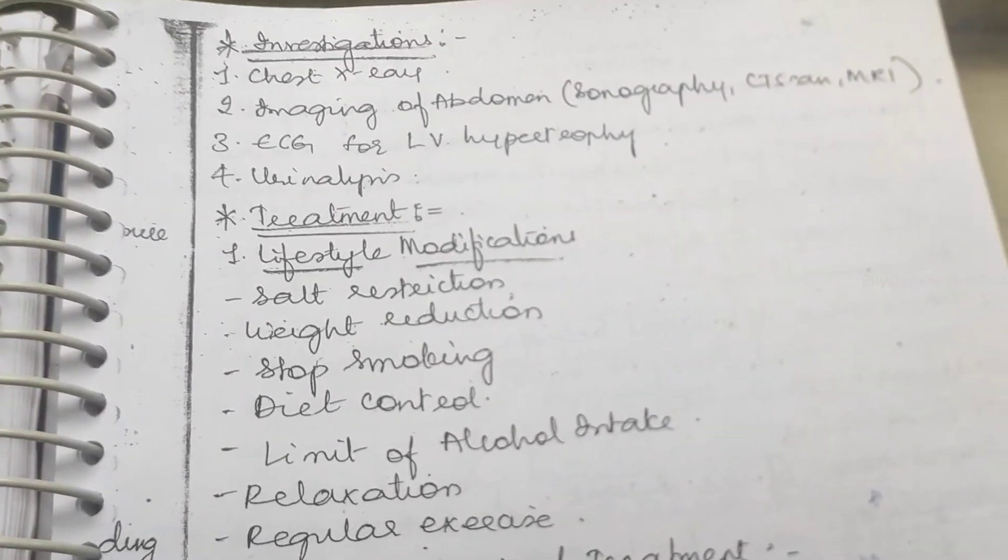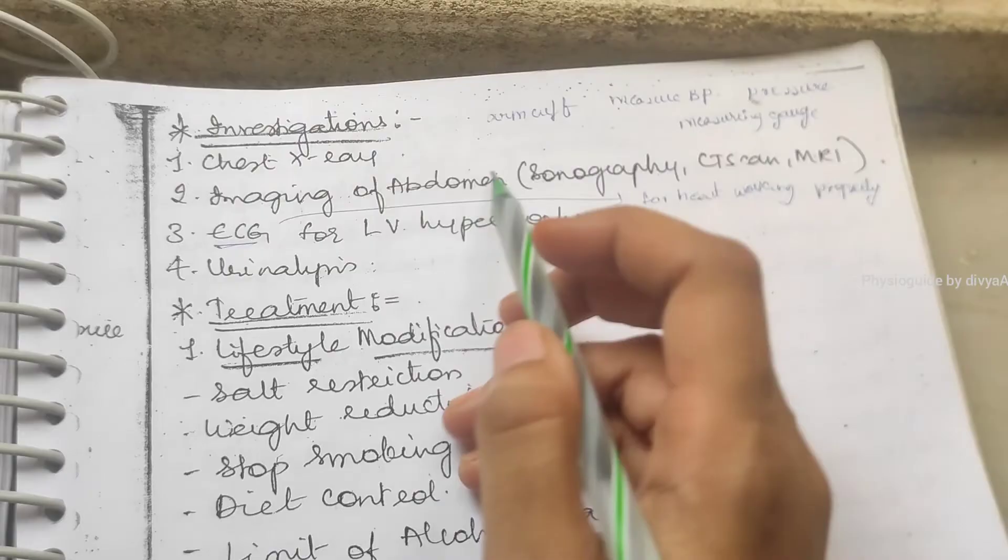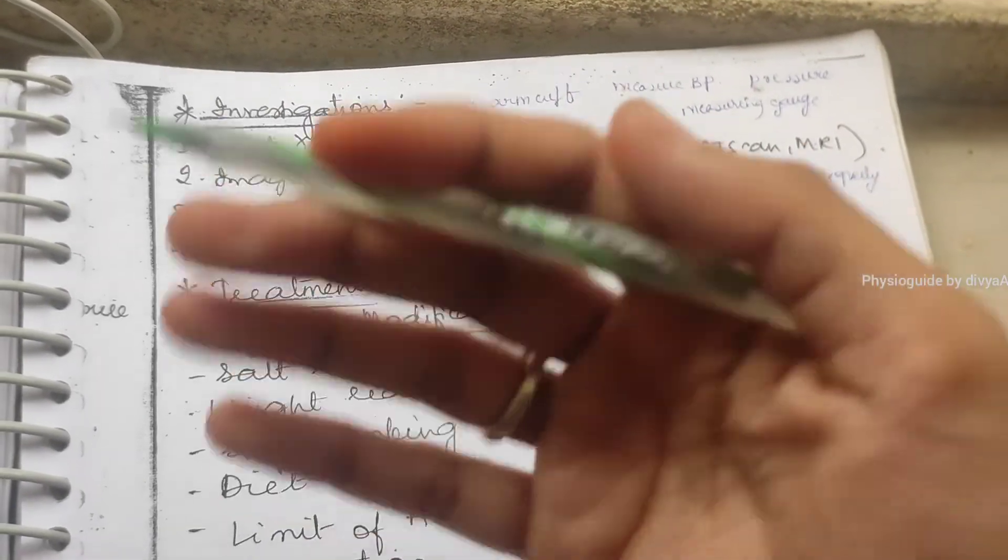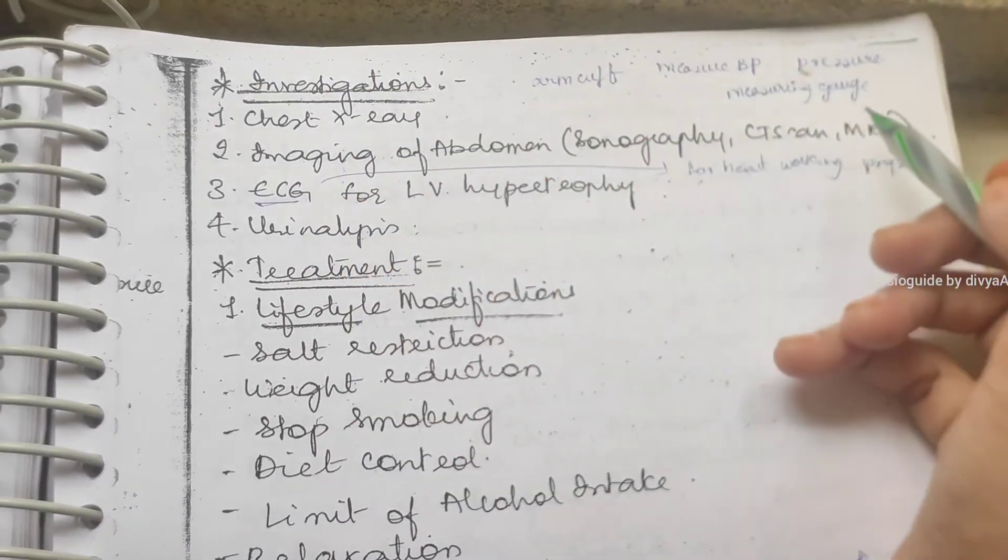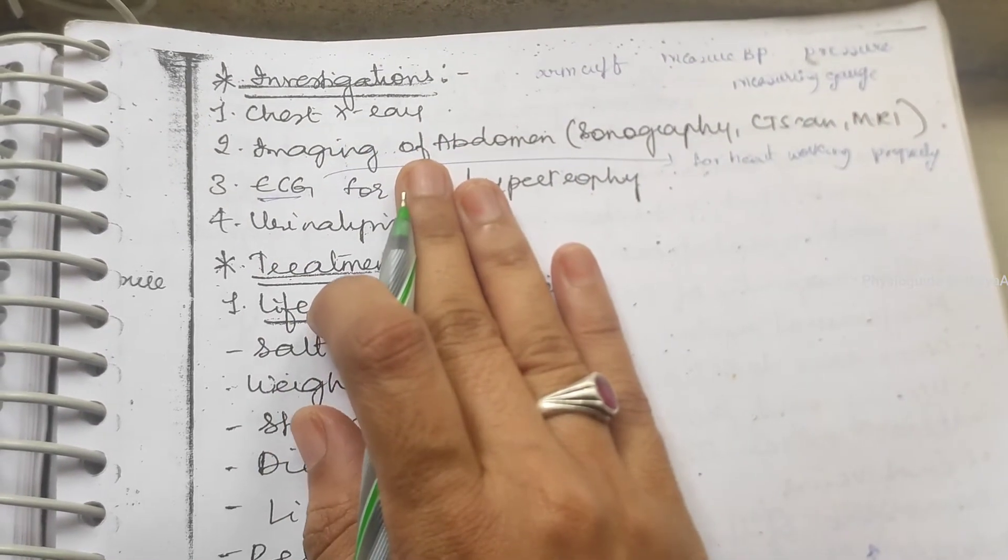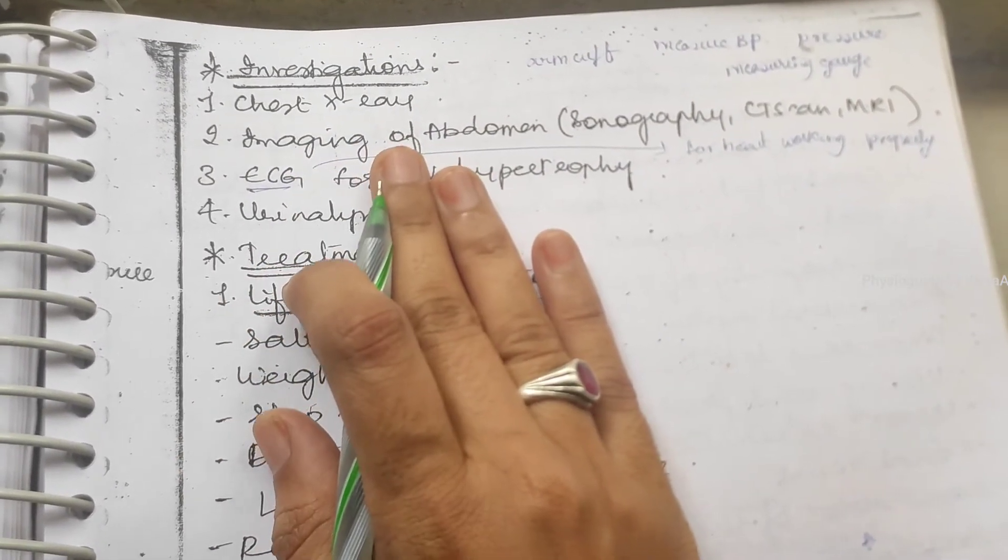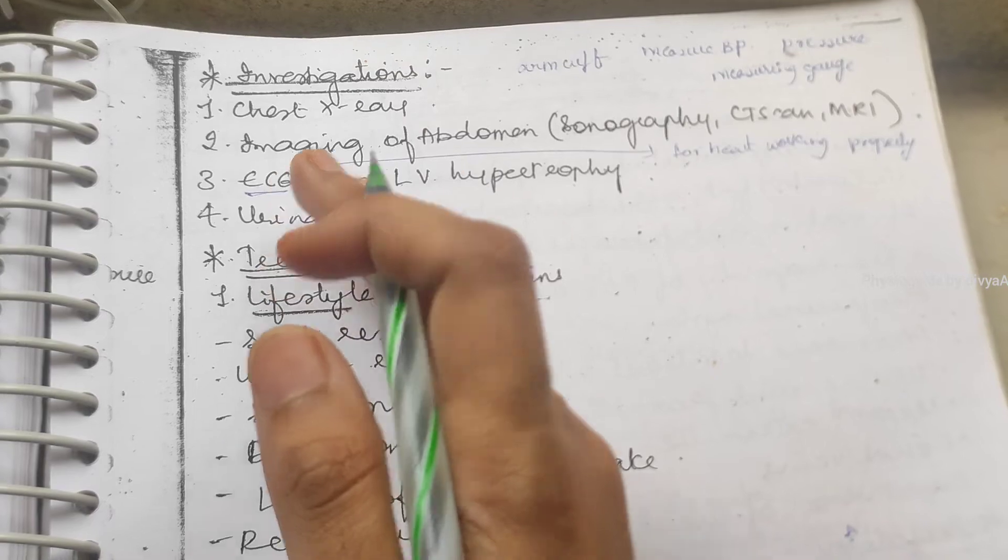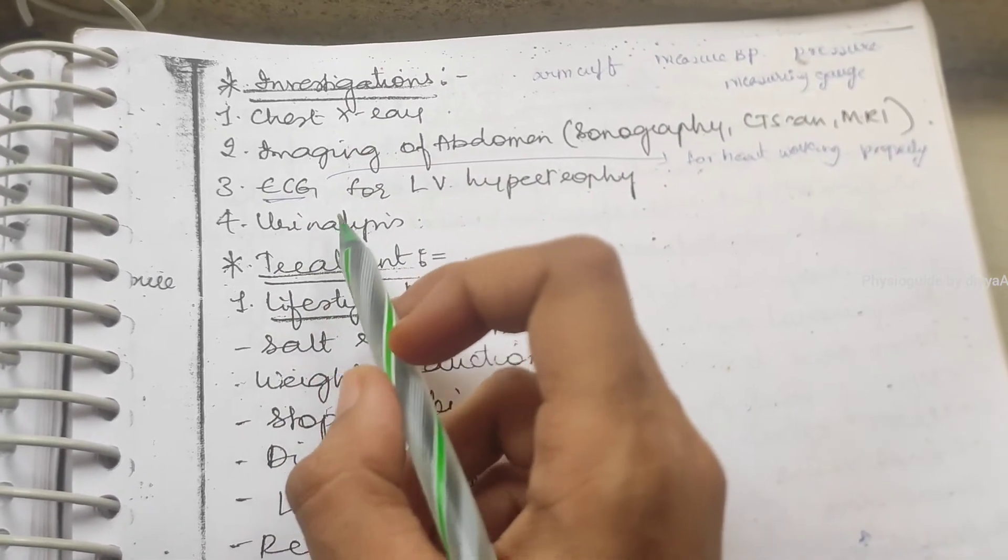What are the investigations we need to do? By handcuff measuring they will measure the BP by pressure measuring gauge. We can take chest x-ray also based on the BP hypertension. ECG to know the heart is working properly or not, CT, MRA also, you can take urinalysis.